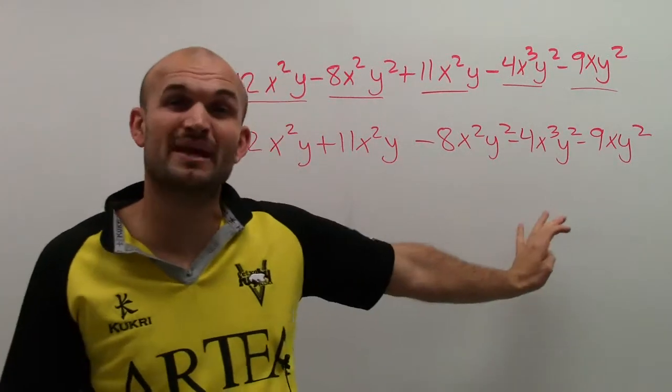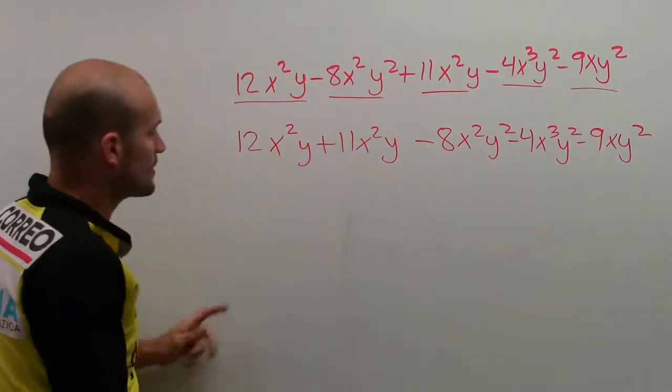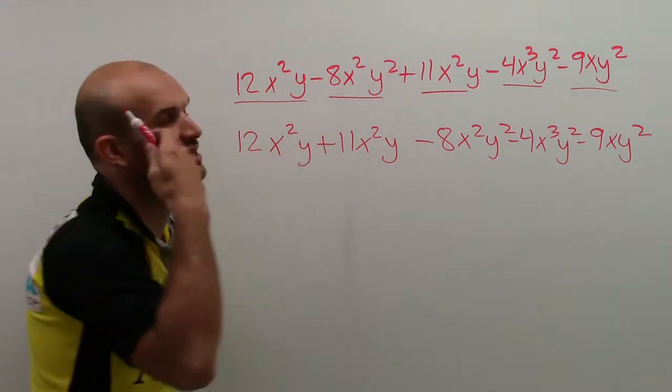So you know what? Even though it looks confusing and big, we're just going to leave them there. We're not going to do anything with them. So now I just need to go to here, and I just look at 12x squared y plus 11x squared y.